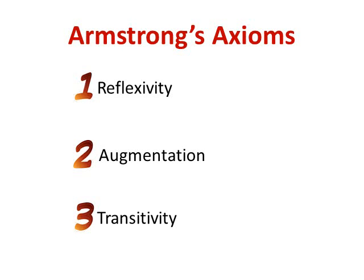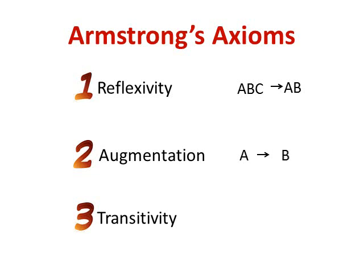Armstrong axioms are made of three distinct axioms: reflexivity, augmentation, and transitivity. Reflexivity states that if A and B are attributes in our relation and are also a subset of attributes ABC, then ABC functionally determines A and B. Augmentation is when we have an attribute A functionally determining B — by augmentation, we can add the same attribute to both sides and there would still be a valid functional dependency. The third axiom, transitivity, states that if A functionally determines B and B functionally determines C, then A must functionally determine C.